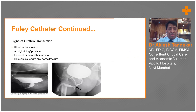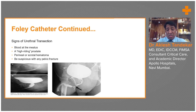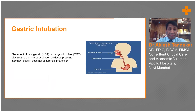Signs of urethral transaction include blood at the urethral meatus, on per-rectal examination the prostate will be high-riding, and perineal and scrotal hematoma indicate possible urethral injury. If there is a pelvic fracture, there should be strong suspicion of urethral injury. A nasogastric or Ryle's tube should also be placed to prevent aspiration risk and achieve stomach decompression.